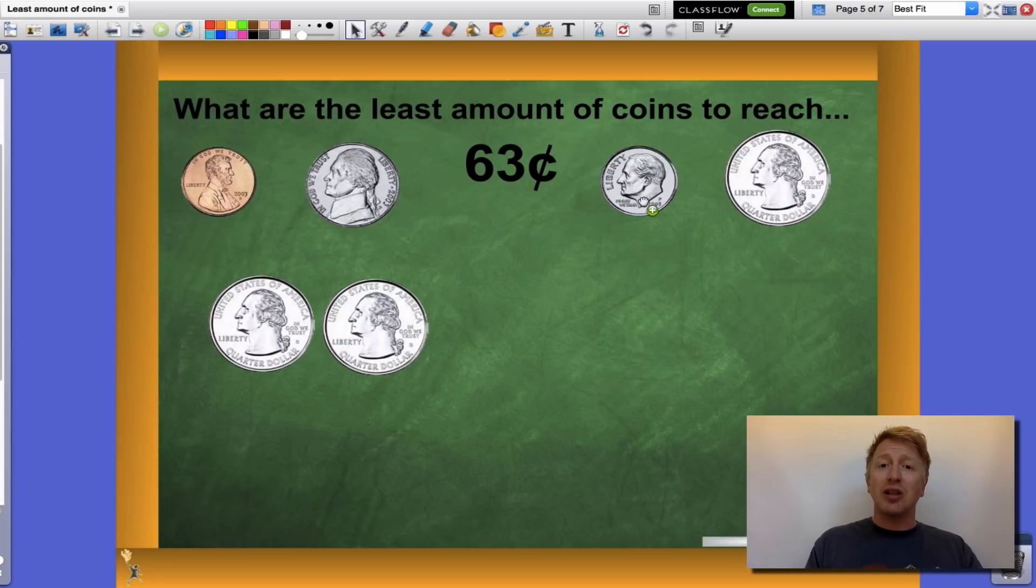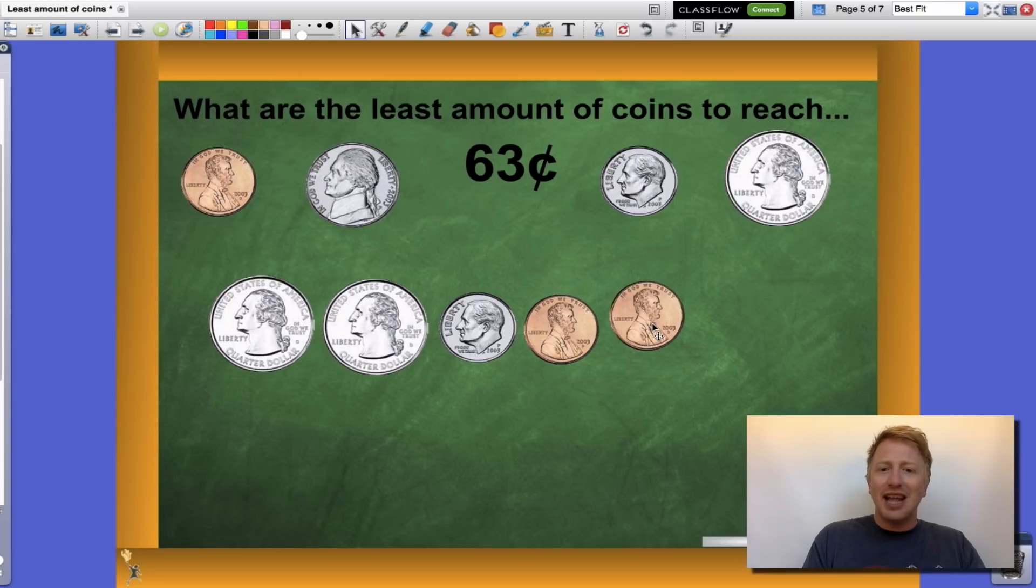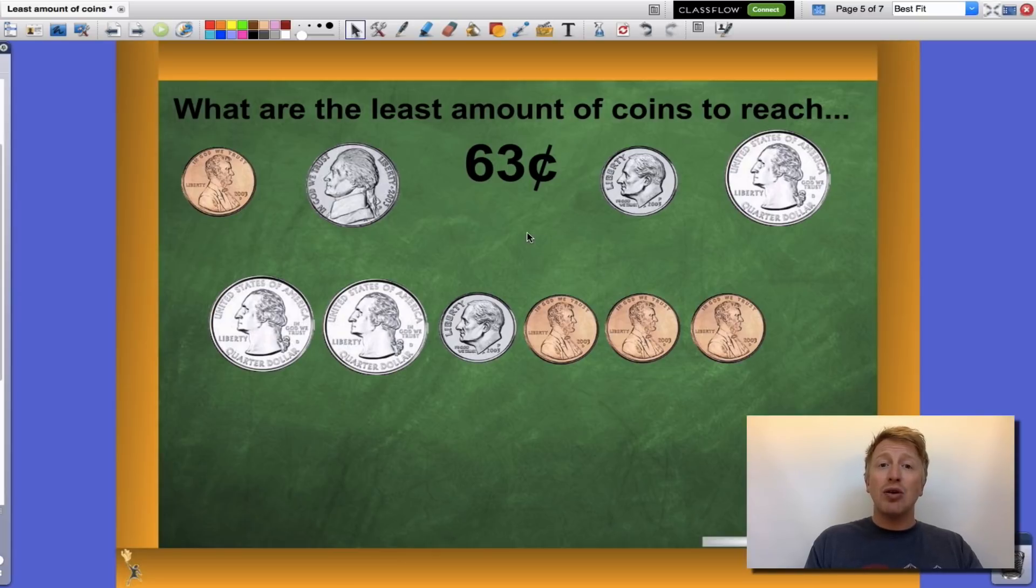So I go to my next largest value, which is my dime. Fifty cents plus ten cents gets me to sixty cents. So again, I'm still under my amount. Well, I have three to go. What am I gonna use? Our trusty old penny. Let's add three pennies in here, and that will get us our rest of the way there. Two quarters, one dime, and three pennies is the least amount of coins that will get us to sixty-three cents.